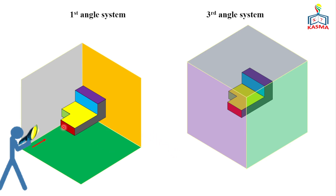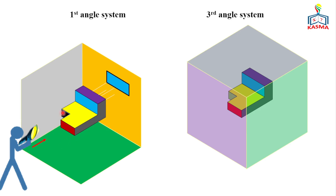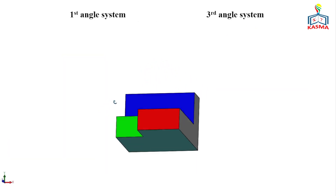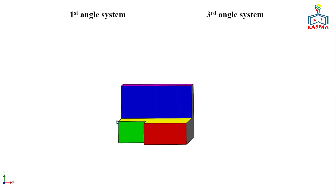For the first angle projection, if you give a light source from a direction, the shadow of each surface will be reflected back onto the projection plane. To make it simple, let me show you with a 3D modeling technique. I'll show the views of the object in different directions. When you look at this object and align to the front side, you see it as it is.